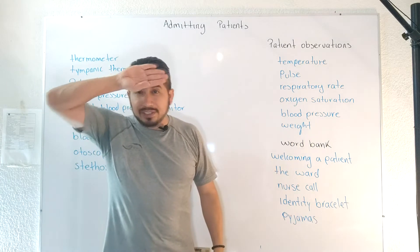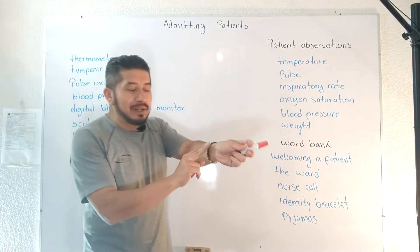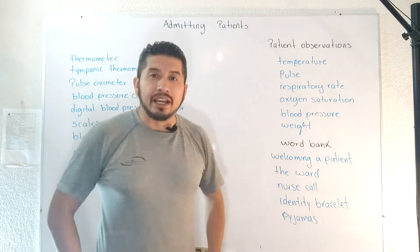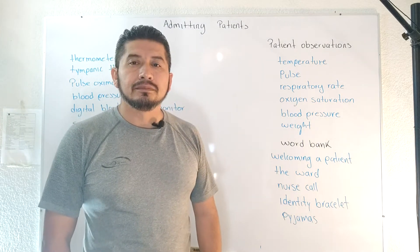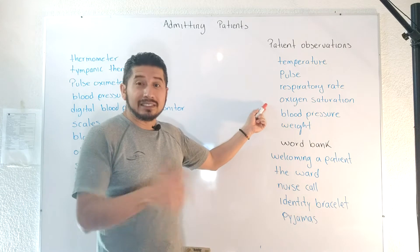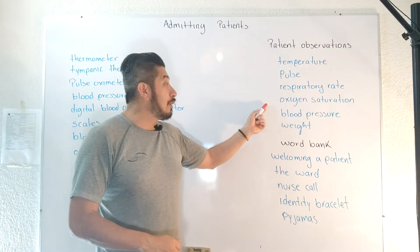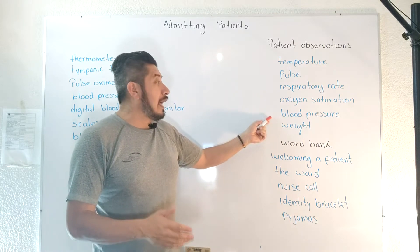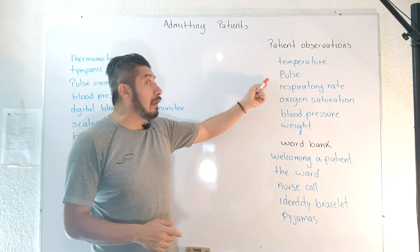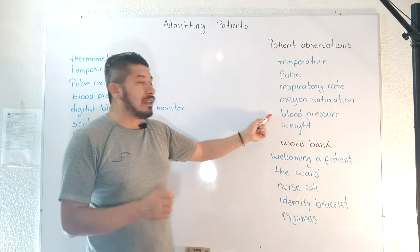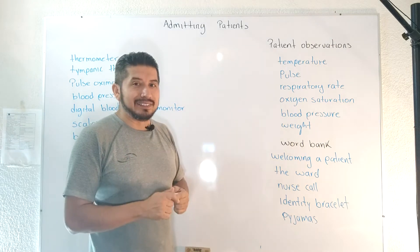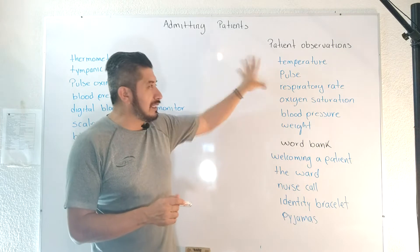Obviously temperature — you check your temperature. We have the pulse; you normally check the pulse here or here. Respiratory rate, oxygen saturation — it's very common — and the blood pressure, and weight. I don't think you have problems with these terms: temperature, pulse, respiratory rate, oxygen saturation, blood pressure, and weight. It's not very common to be a problem. Similar to Spanish.